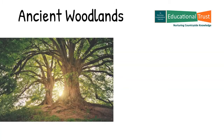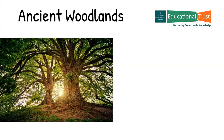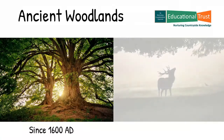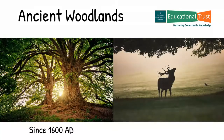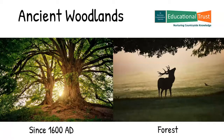Woodlands also vary depending on how long they have been established. In Britain, ancient woodlands are designated as those which have been continuously wooded since at least 1600 AD. In England, the term Forest, with a capital F, refers to an area where the king or queen has the right to keep deer and to make forest laws. This is where gamekeepers were originally employed to protect the monarch's deer herds.